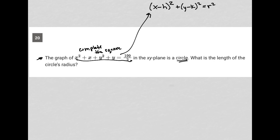What is the length of the circle's radius? So the whole question is basically to figure out what r equals. Let's start with this equation. I'll jump straight into completing the square.